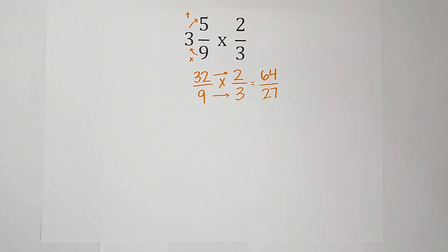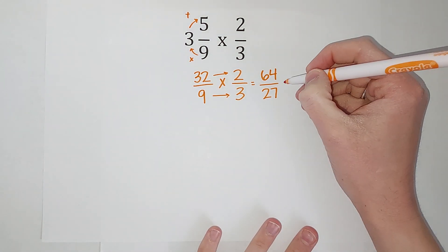All right, so my answer is 64/27, but it's a lot easier to understand if we turn it back into a mixed number. I don't know what 64/27 looks like.